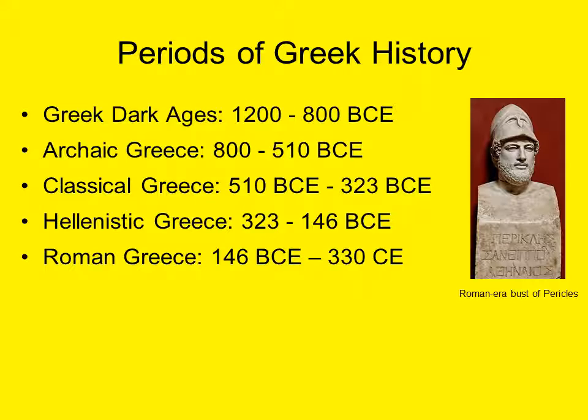Classical Greece is a period with which most Westerners are familiar. It is noted for advanced architecture, mathematics, science, literature, and philosophy.